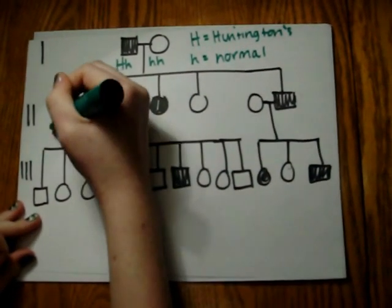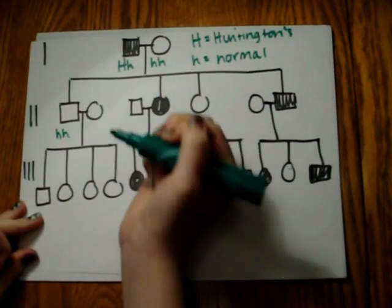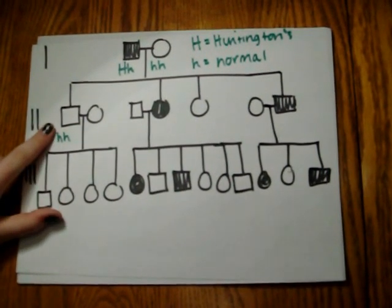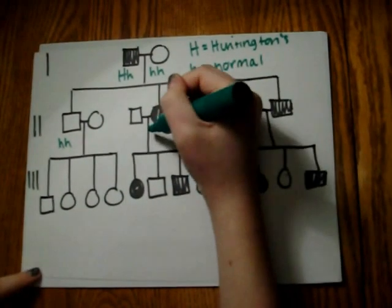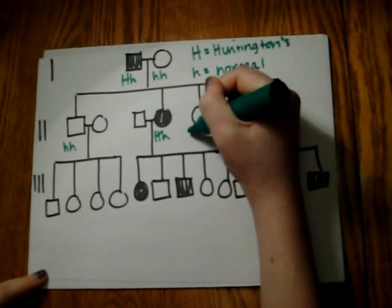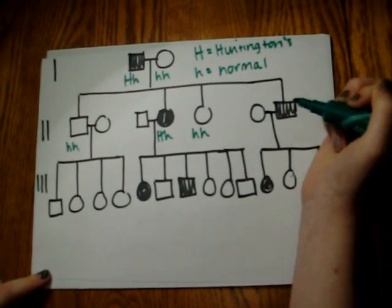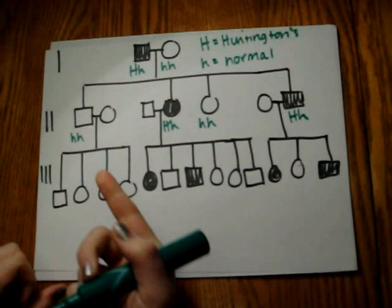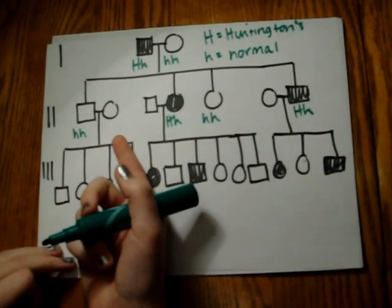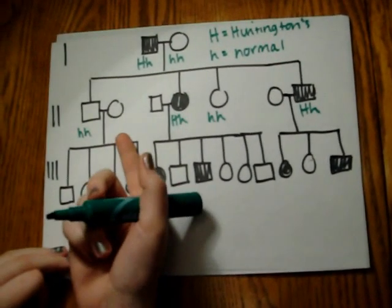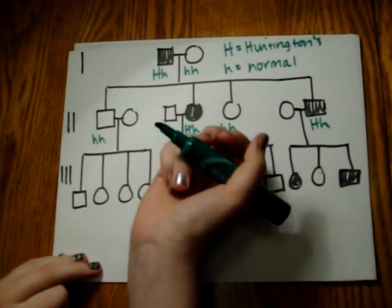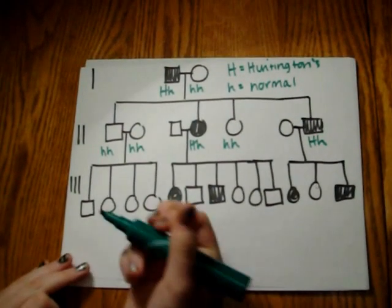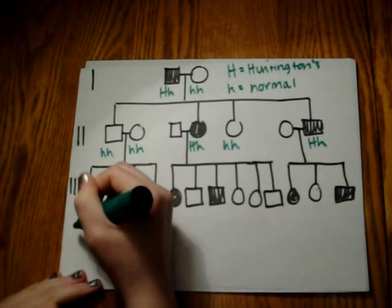Their offspring will be hh because that one does not have Huntington's disease, Hh, hh, and Hh. This offspring mates with another unaffected female, and she is hh. All their offspring will be little h's.